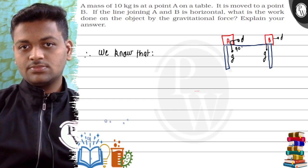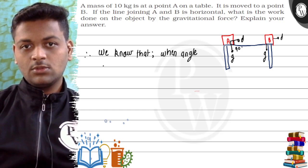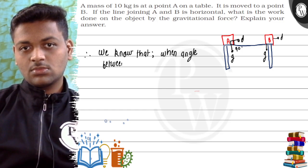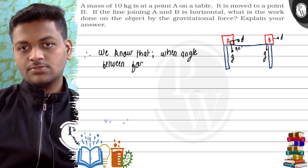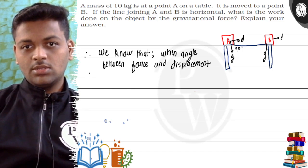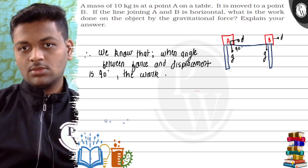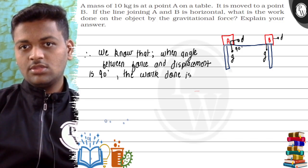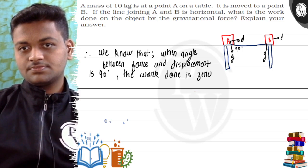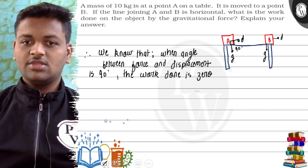We know that when the angle between force and displacement is 90 degrees, the work done is zero.